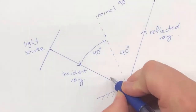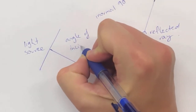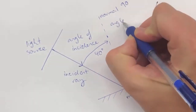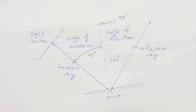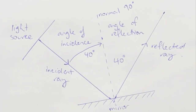Using a protractor, I also measure the angle of the reflected ray from the normal, and again you can see that it is 40 degrees. So the angle of incidence — the angle between the incident ray and the normal — is equal to the angle of reflection, which is the angle between the reflected ray and the normal. That gives you a complete diagram showing all parts of the law of reflection.